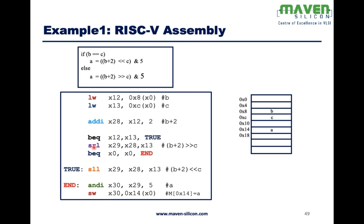If the condition is false, the only difference is it does a right shift — b plus 2 right shift — and then an unconditional jump. If false, it executes PC equal to PC plus 4, which is the next instruction. It does right shift, then checks b equals x0 (which is always 0), then does an unconditional jump to end. In both branches we do the AND operation and store the value back into memory. This is how we write an assembly program.